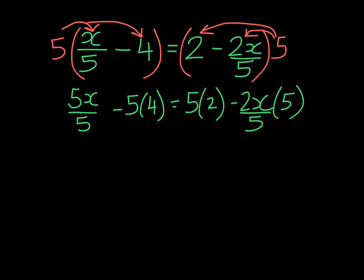Well, 5 over 5 becomes 1x. Negative 5 times 4 is negative 20. 5 times 2 is 10. And here we can cancel the 5 with the 5 to leave us with negative 2x.